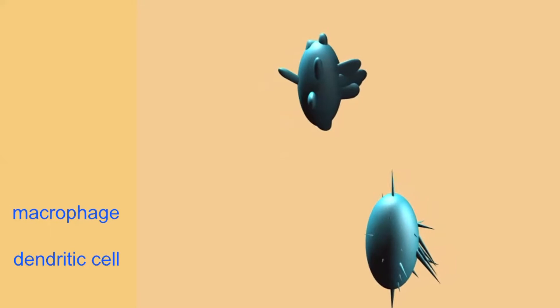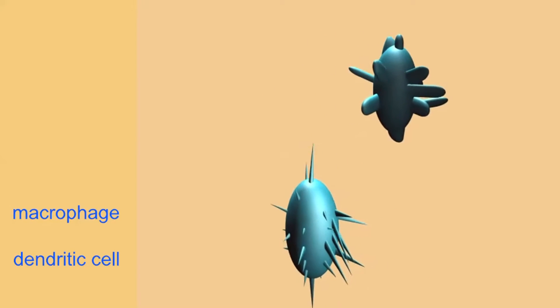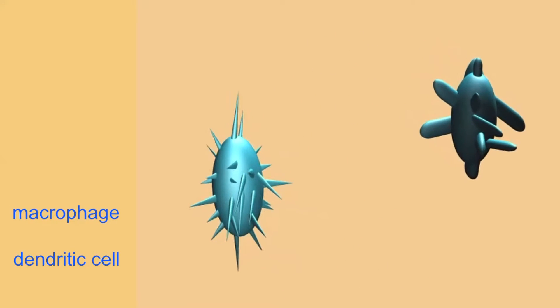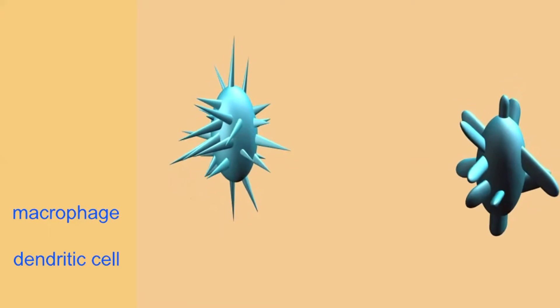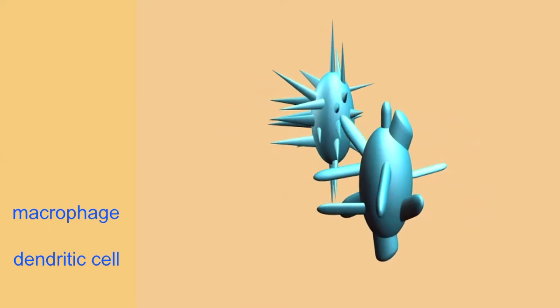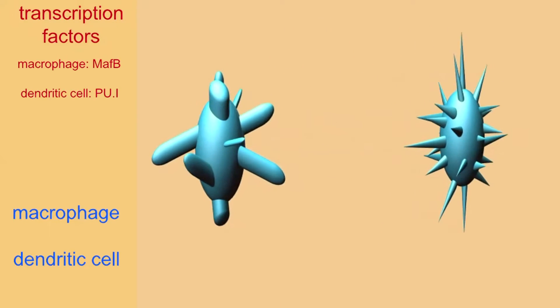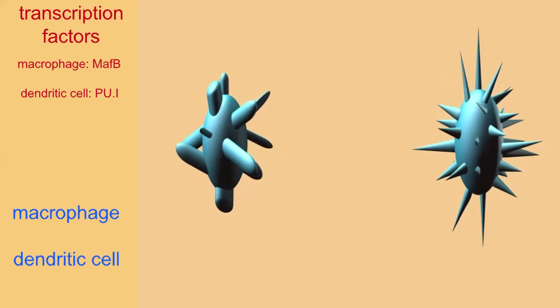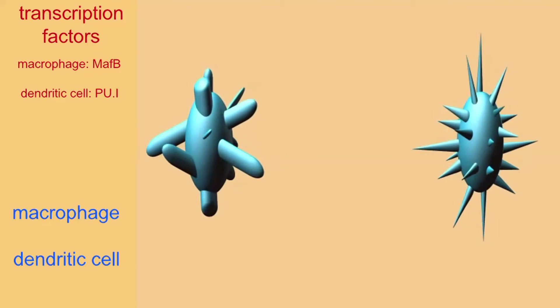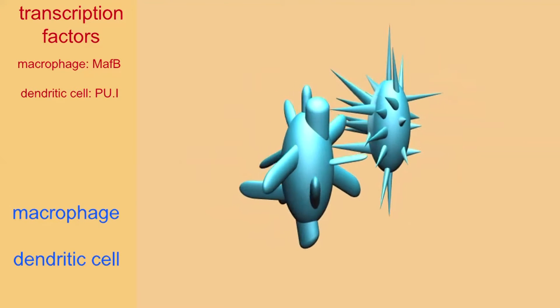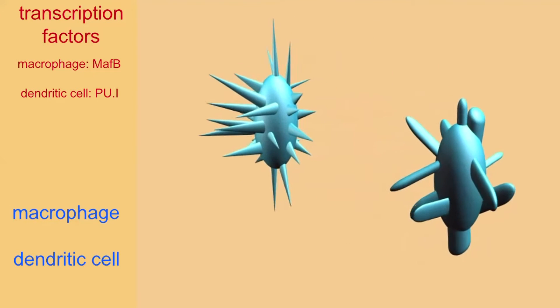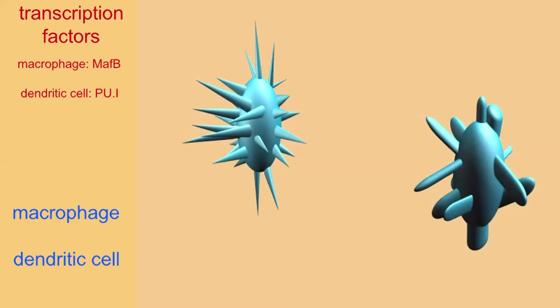These cells share some features, and it is the cytokine signals given to the monocytes and the transcription factors which they subsequently express to change their DNA expression patterns, which will determine whether the monocytes differentiate into dendritic cells or macrophages.